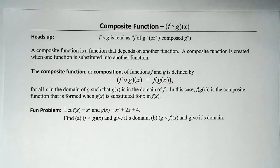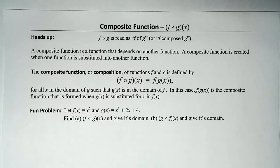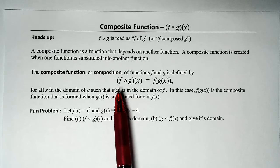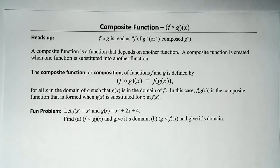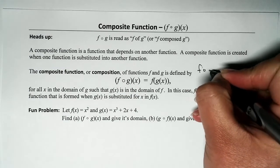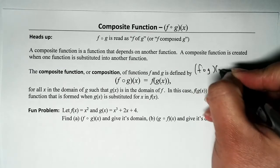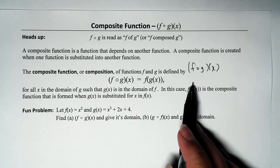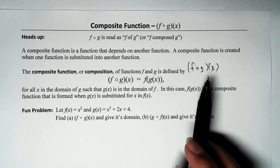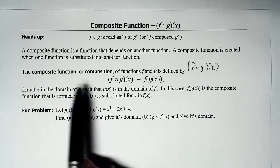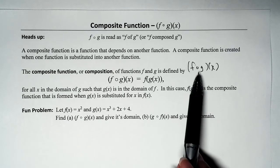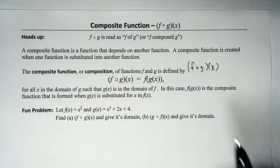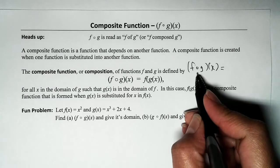The composite function reads F-circle-G of X. That circle symbol is read as 'of,' so this is read as F of G of X. The symbol for the composite function is just a small circle — not to be confused with the raised dot, because if it were a raised dot, we would have filled it in.